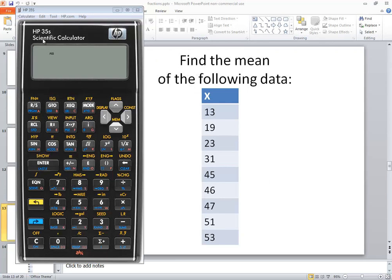Let's find the mean of the following data on an HP 35S scientific calculator. First thing we want to do is clear out any numbers that might already be in there.